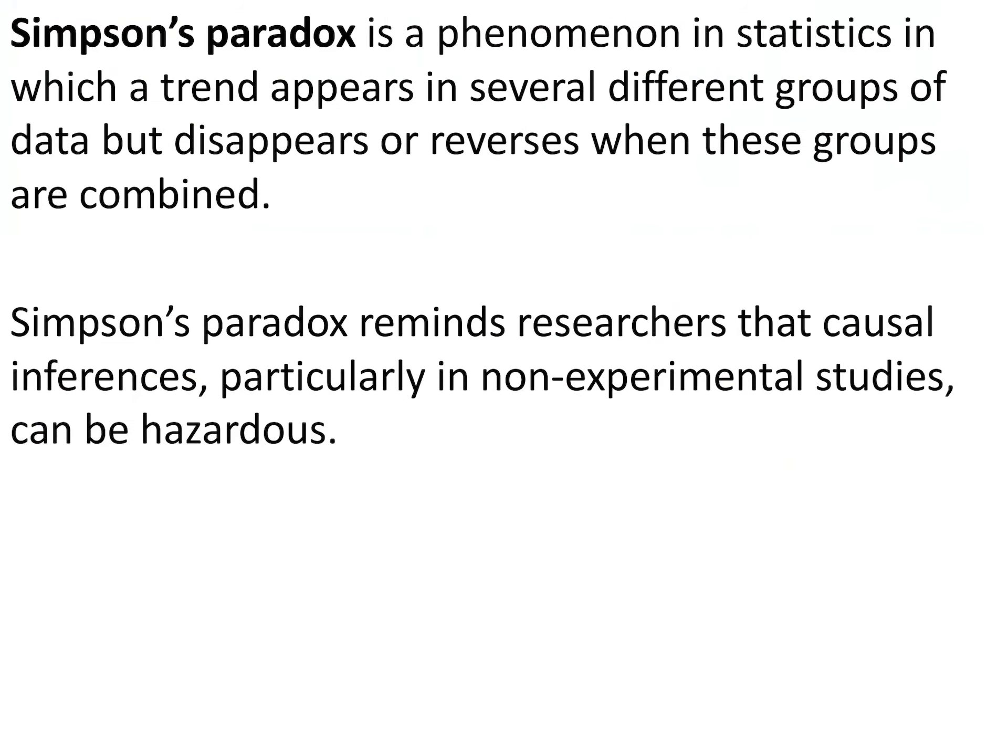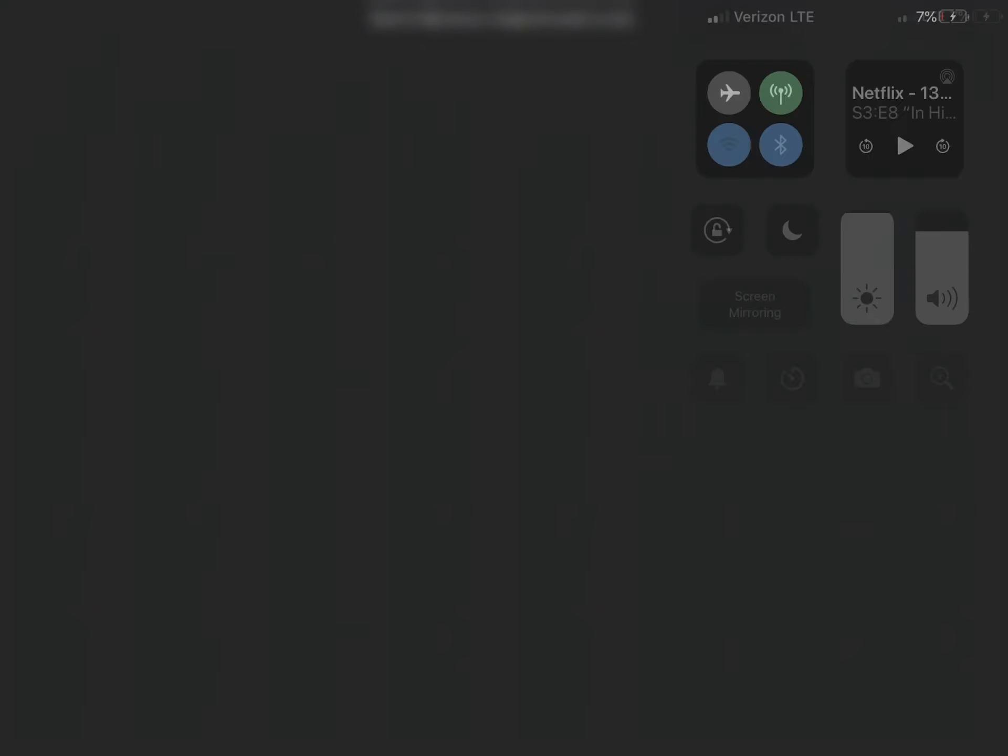Simpson's paradox is a phenomenon in statistics in which a trend appears in several different groups of data, but disappears or reverses when those groups are combined. Simpson's paradox reminds researchers that casual inferences, particularly in non-experimental studies, can be hazardous.